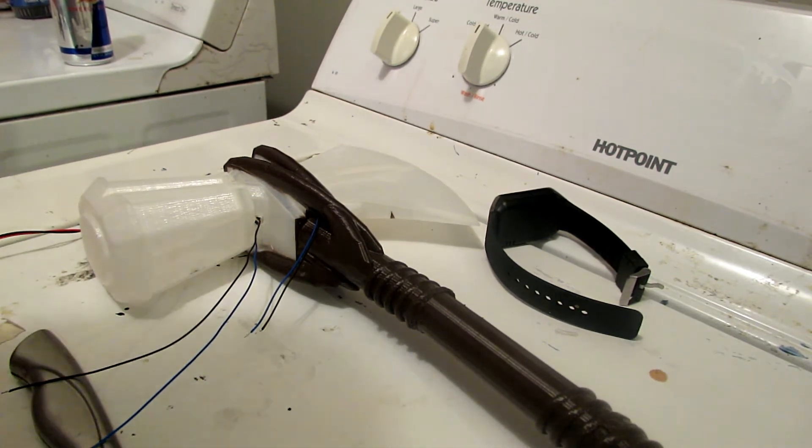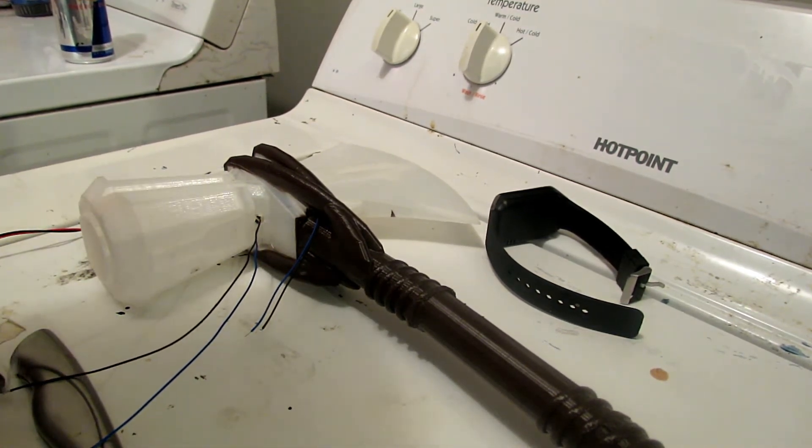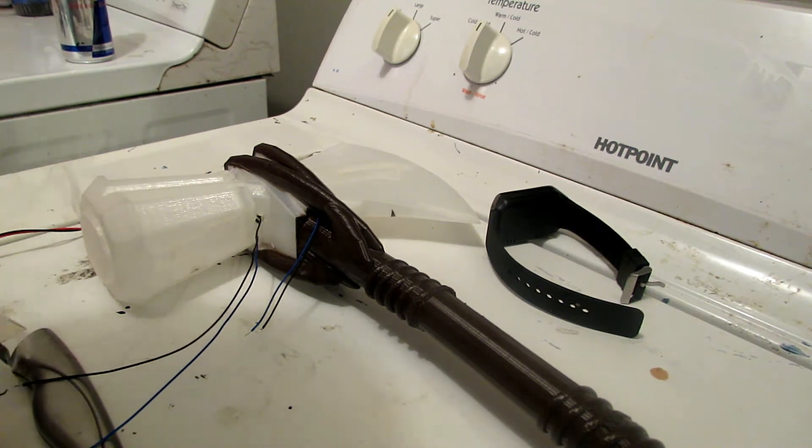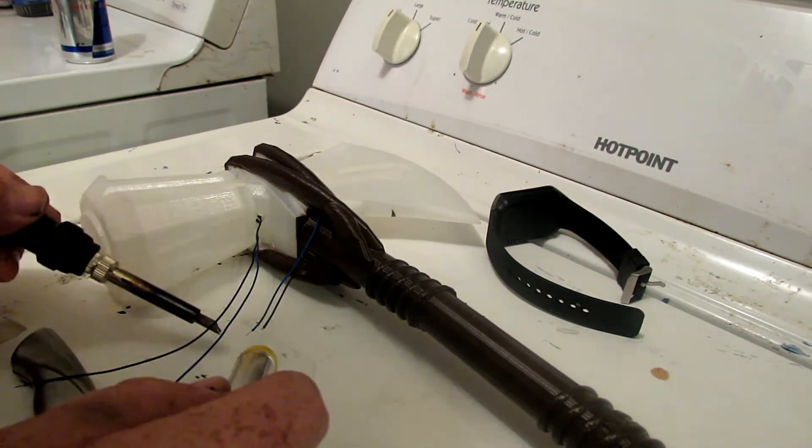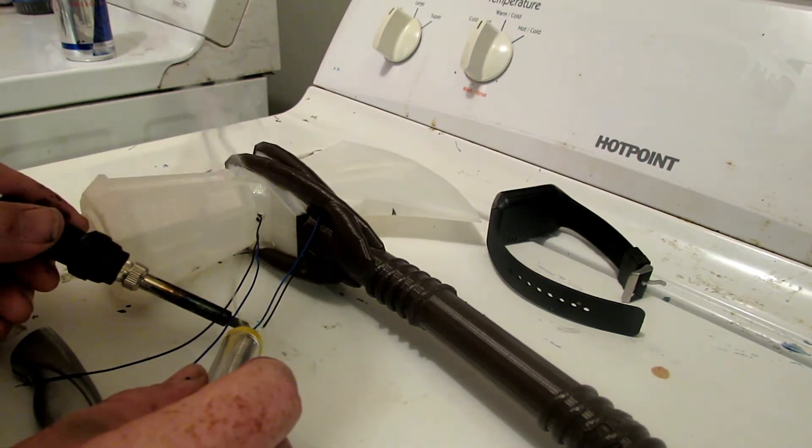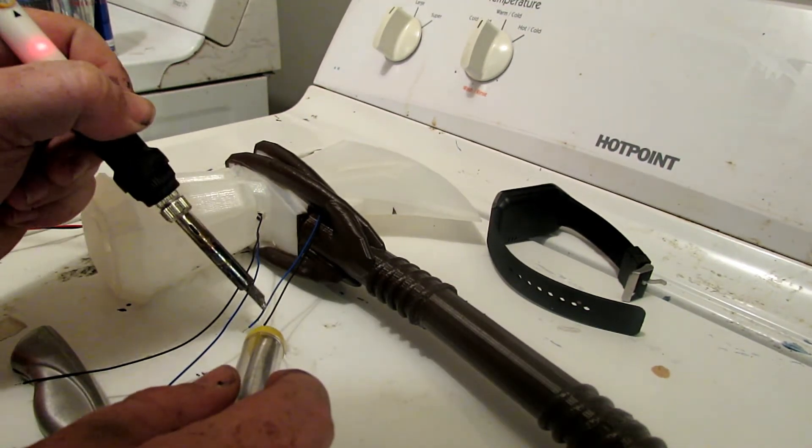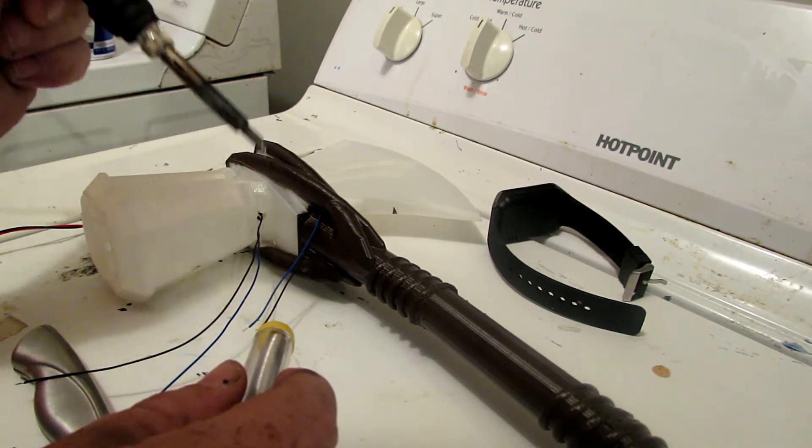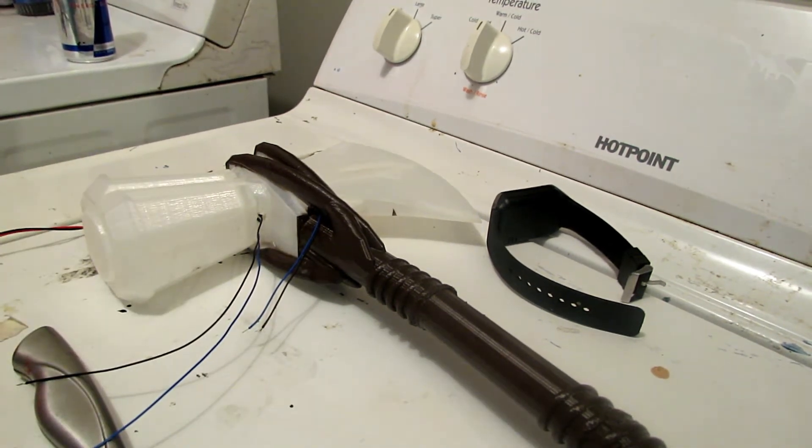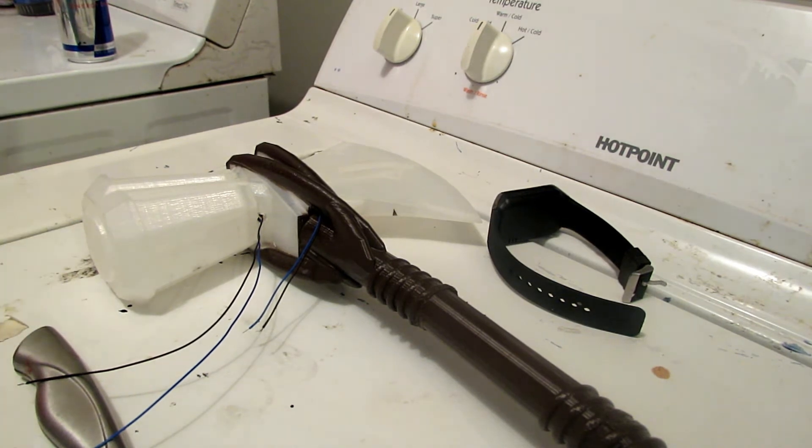You can use a drill bit or you can use, Dremel has a sanding, it's like a sanding thing that's kind of the shape of a triangle. And I just took that and it was a perfect size.